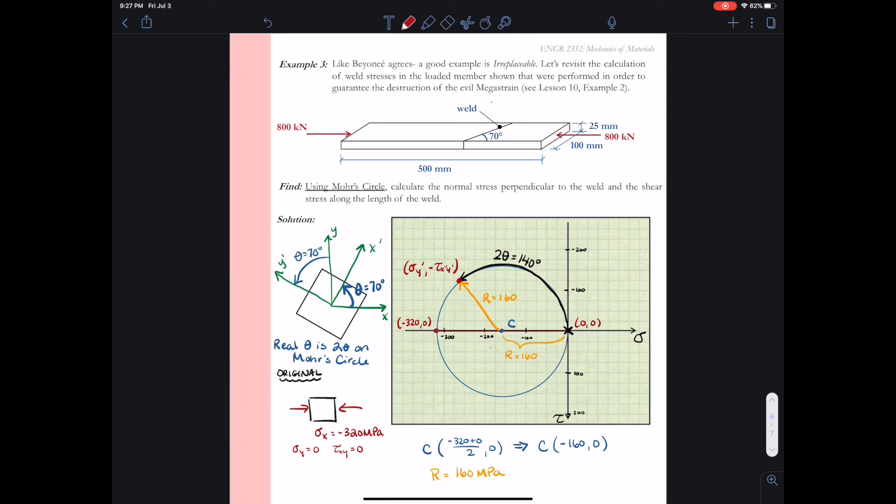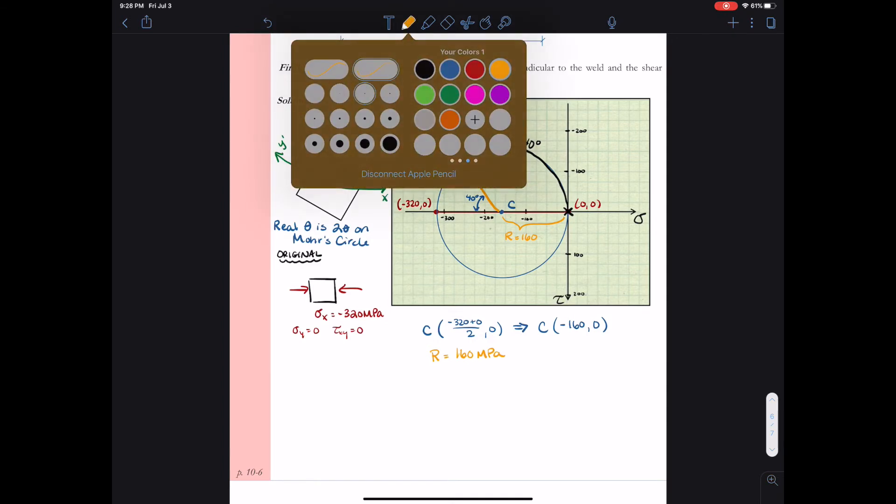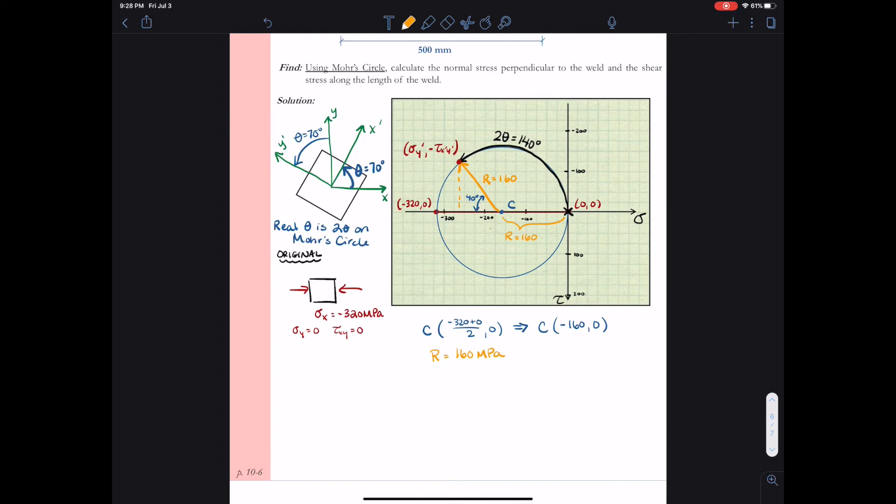The point we end up at is sigma y prime comma minus tau x prime y prime. I just want to solve for the coordinates of this point. I have the radius, 160 MPa, and the angle, 140 degrees from 0, 0, which means it is 40 degrees above the x-axis. If I look at that triangle, the value minus tau x prime y prime equals the radius sine 40 degrees. So 160 sine 40 degrees gives us 102.85 MPa.